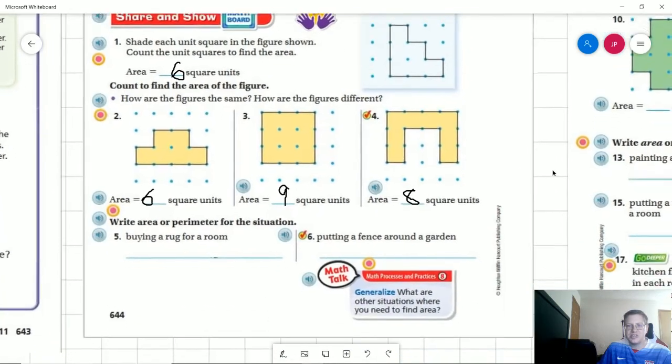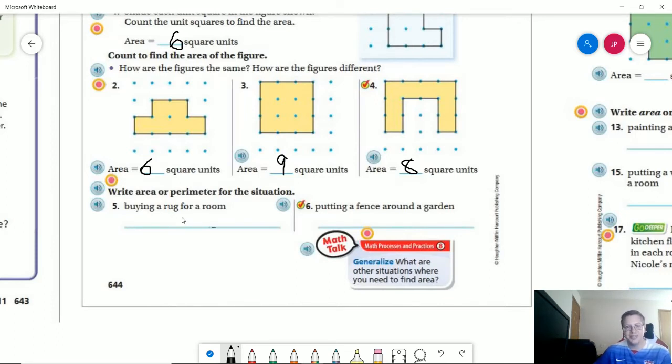For number five and number six, we want to think about whether we would be using area or perimeter. If we're buying a rug for a room, we are going to put that inside a room. It's going to take up a certain amount of space. It's not going to be the outside of the room. If we're going to buy a rug to use for a room where we live, it's probably going to go on the floor, so we could say area for that one. Putting a fence around a garden would be perimeter. This would be the perimeter or the fence around the garden, and then the area would be the amount of space that the garden takes up.